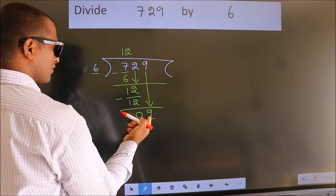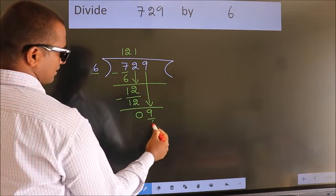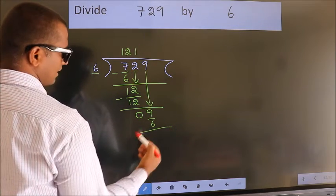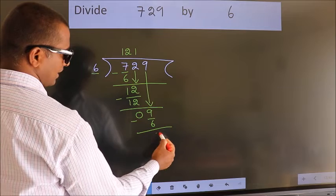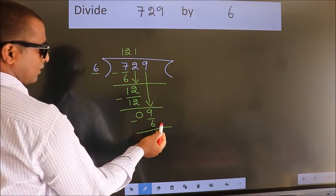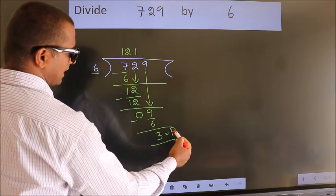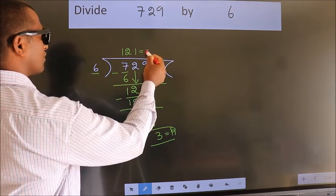A number close to 9 in the 6 table is 6 once 6. Now we subtract. We get 3. No more numbers to bring down, so we stop here. This is our remainder. This is our quotient.